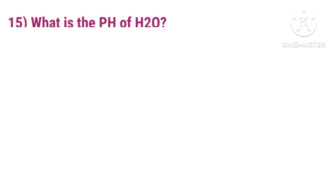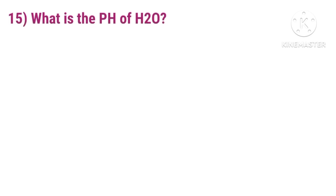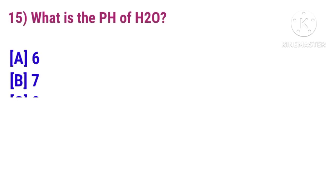Question 15: What is the pH of H2O? Answer is 7.